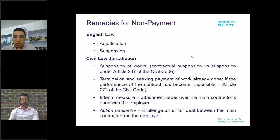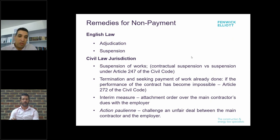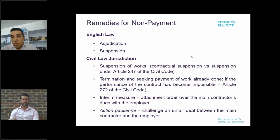Some contracts provide for suspension rights, others do not. In case there is no suspension provision in the contract, a party seeking suspension might rely on the legal provision in the civil code and must comply with any notification provisions. If there is no notification provision, they must — out of good faith in performing the contract — notify the other party of their intention to suspend the work within a reasonable time frame.